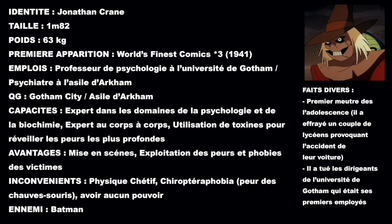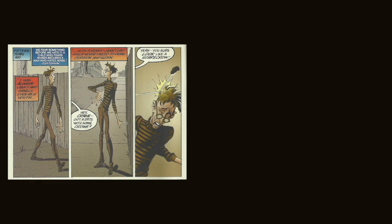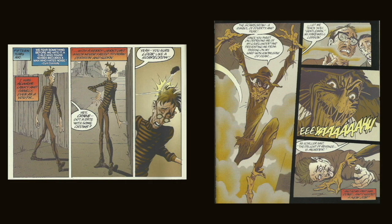Ses avantages sont sa mise en scène et l'exploitation des peurs et phobies de ses victimes. Pour ses inconvénients, il a un physique chétif, sa chiroptophobie — la peur des chauves-souris — et il n'a aucun pouvoir. Son ennemi principal reste bien évidemment Batman. On peut noter comme fait divers son premier meurtre dès l'adolescence, où il a effrayé un couple de lycéens, provoquant l'accident de leur voiture, et il a également tué les dirigeants de l'université de Gotham. Alors qu'il était enfant, le petit Jonathan Crane était en permanence rejeté à cause de son style de rat de bibliothèque. Surnommé l'Épouvantail par ses bourreaux, il n'a pas tardé à utiliser ce surnom pour se venger en planifiant des stratagèmes d'épouvante contre eux.